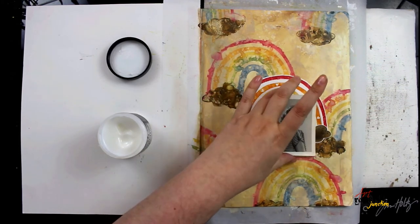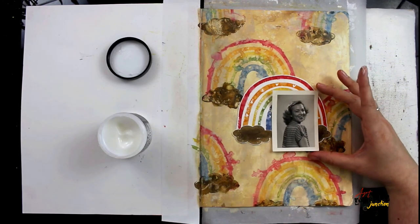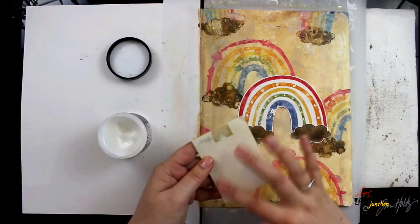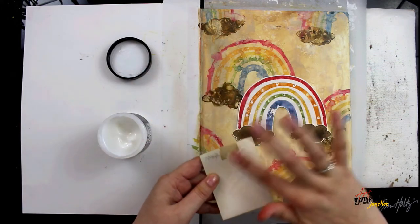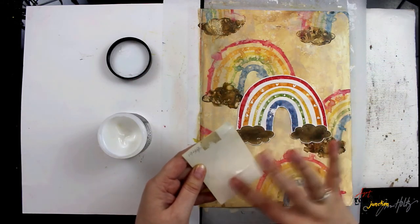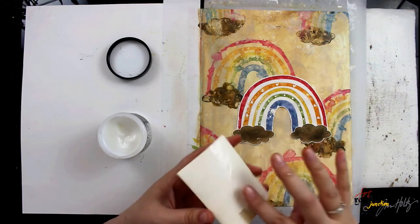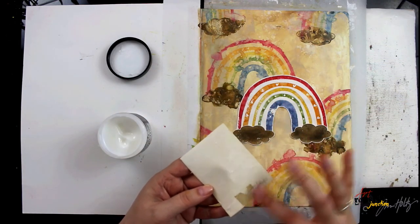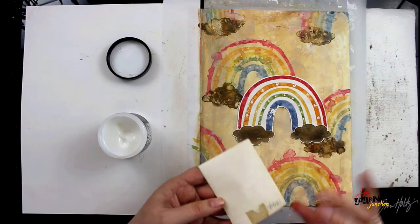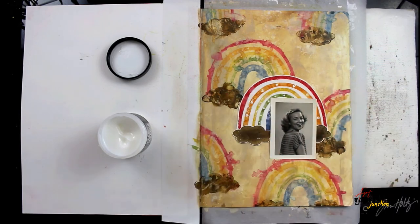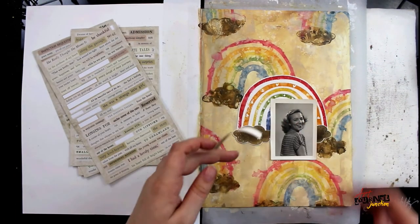I've glued down the rainbow stripes and the clouds, and now I'm also going to glue down this graduation photo which was taken in 1949. I purchased this photo along with others at an estate sale. There was no one who wanted them in the family, so I am giving them new life now in my art journal.